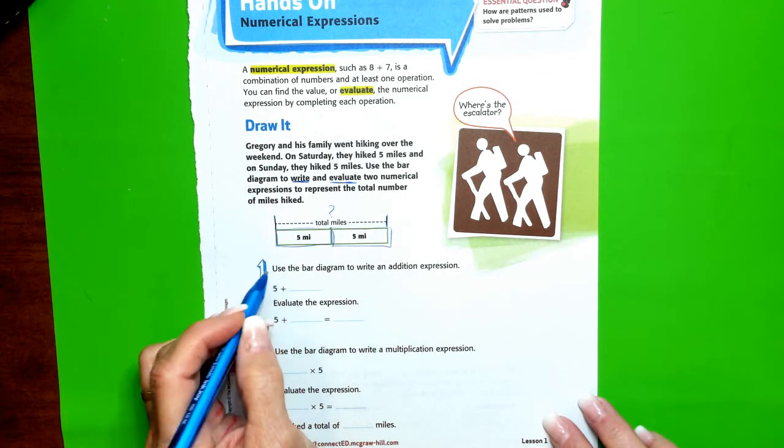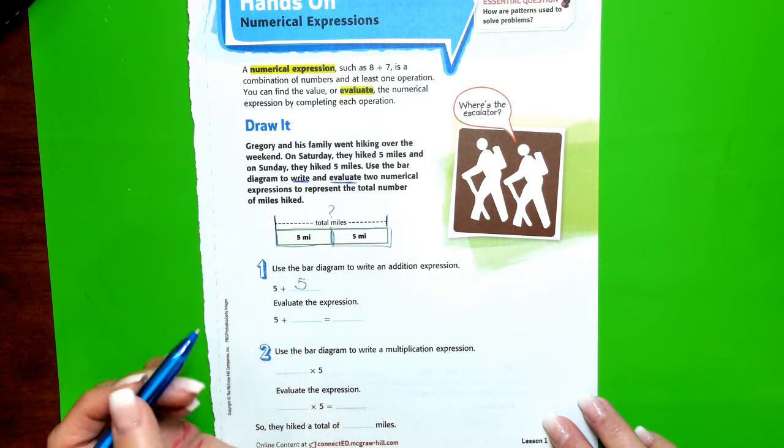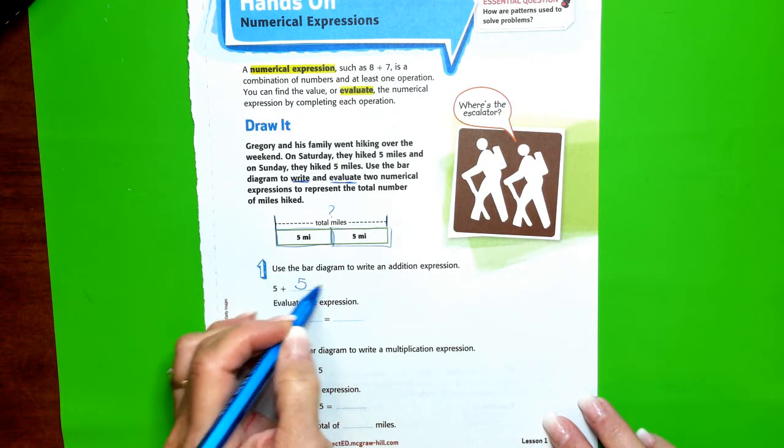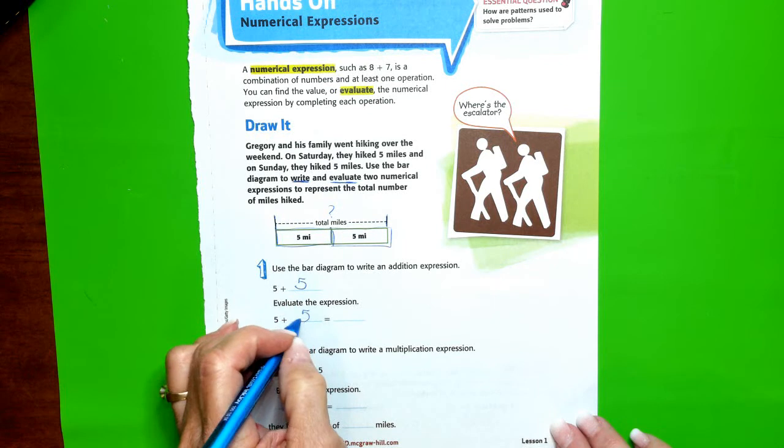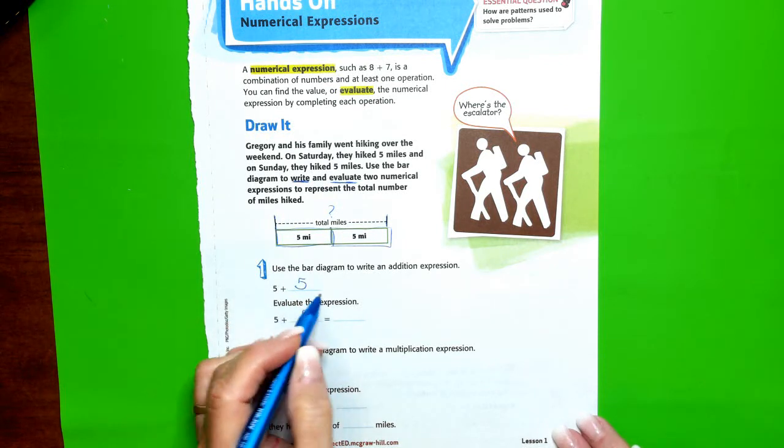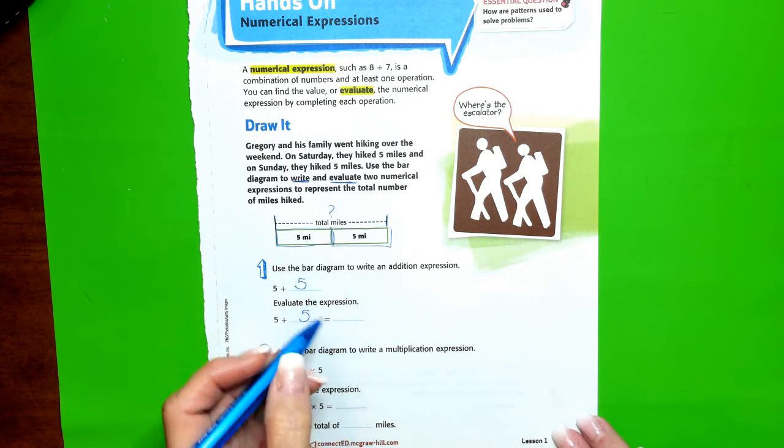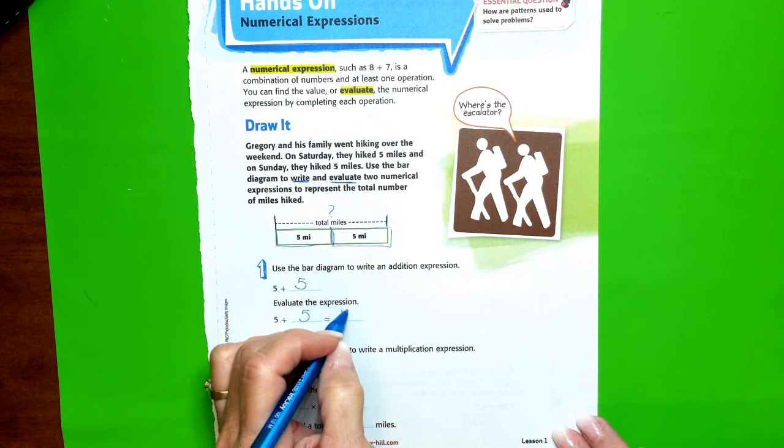The bar diagram is 5 plus 5. This is our expression, 5 plus 5. Now, we're going to evaluate the expression by solving the problem. 5 plus 5 is 10.